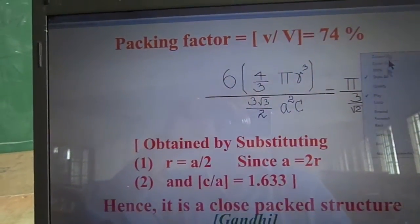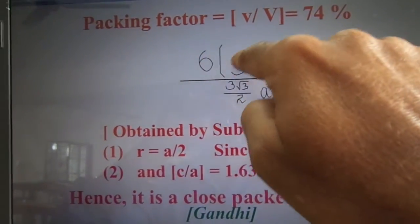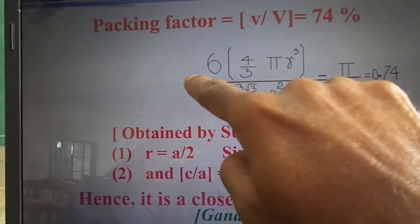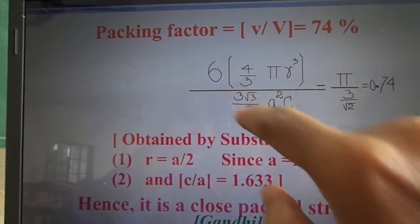So the packing fraction equation is on display now. Six atoms inside the unit cell. Six into four by three πr³. Volume of one unit cell multiplied by six. So volume of the atoms inside the unit cell is the numerator divided by the volume of the unit cell.